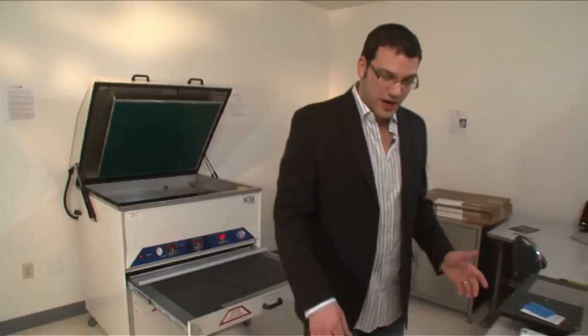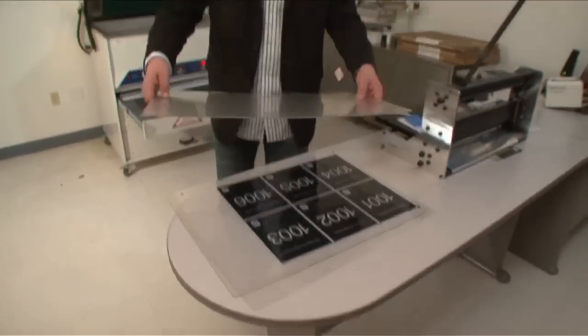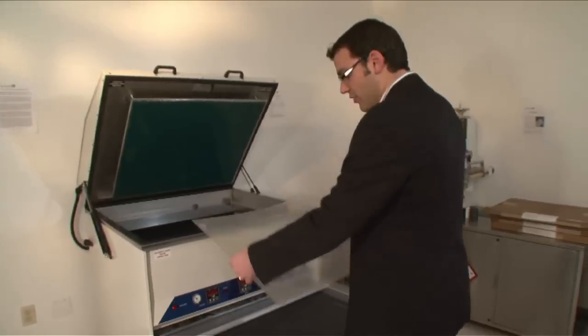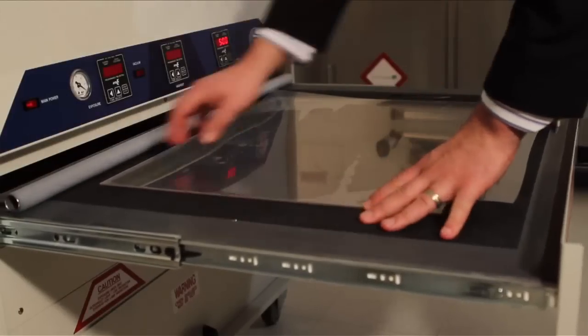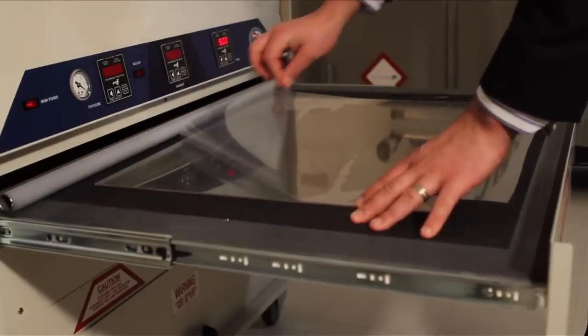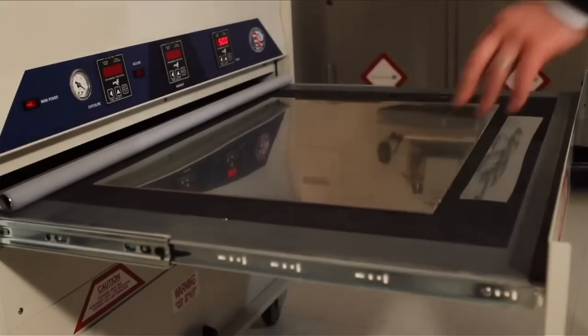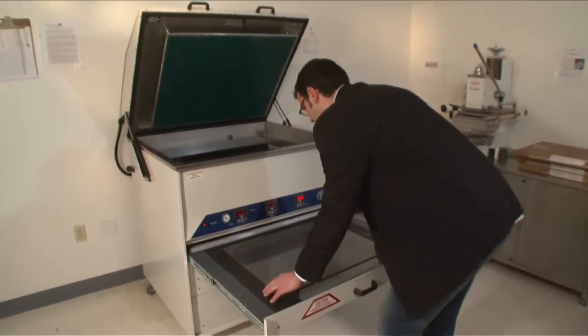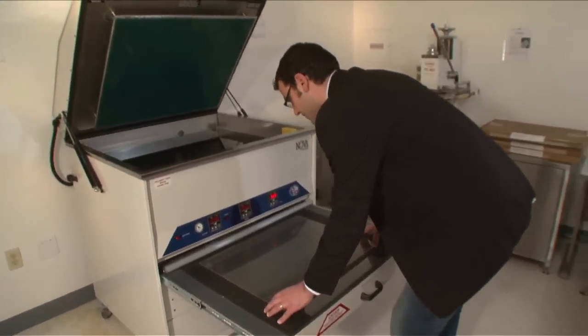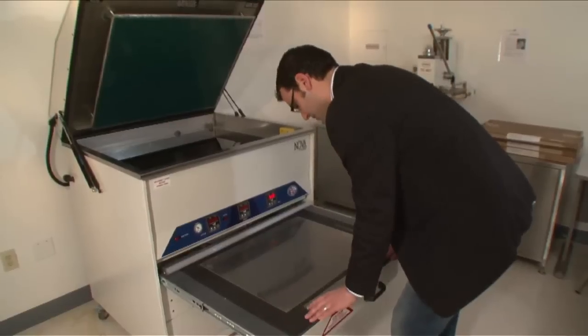What we're going to do is grab our sheet of photopolymer, carry it over, flip it over so the polymer side is facing up, and we're going to peel off our mylar cover sheet. Now, we want to position the sheet of polymer in the center of the exposure table. Once we're in position, we can grab our film negative.